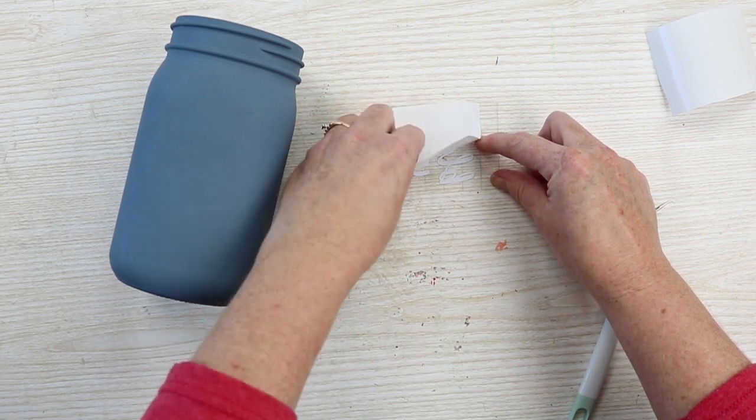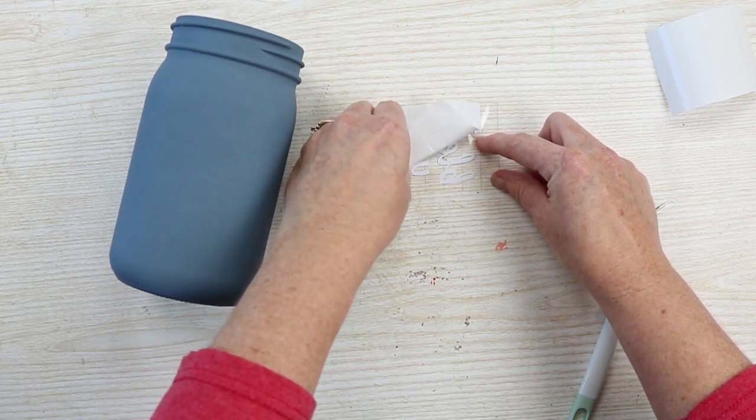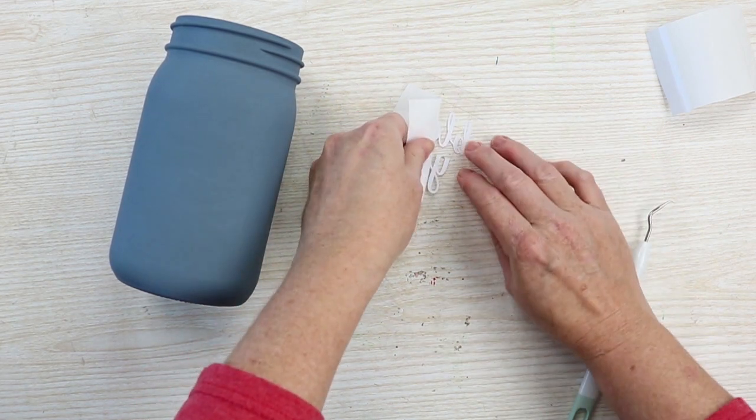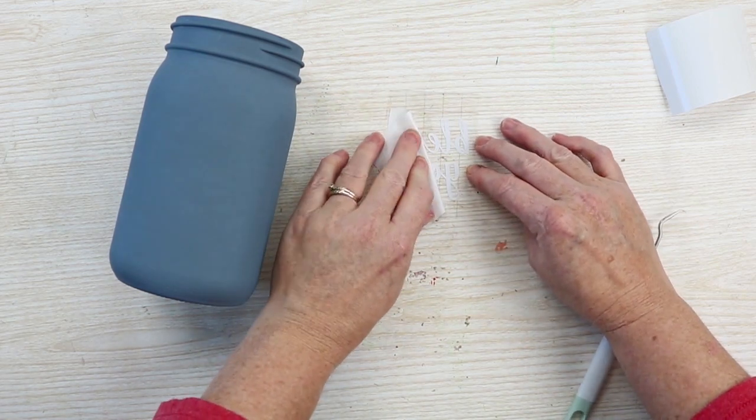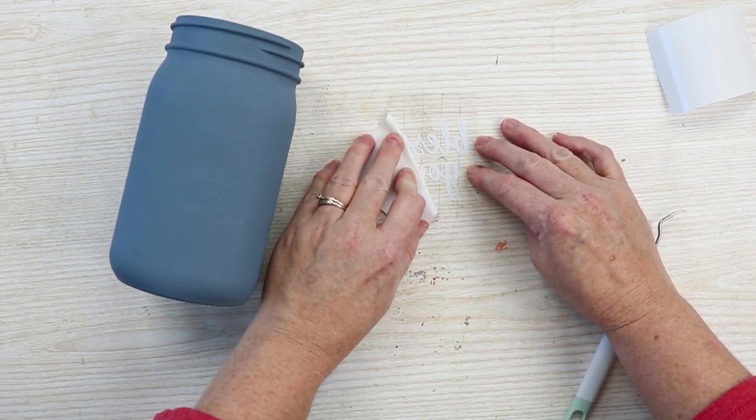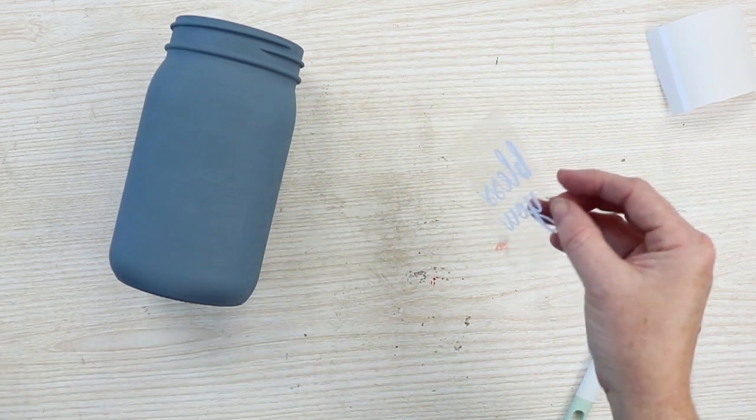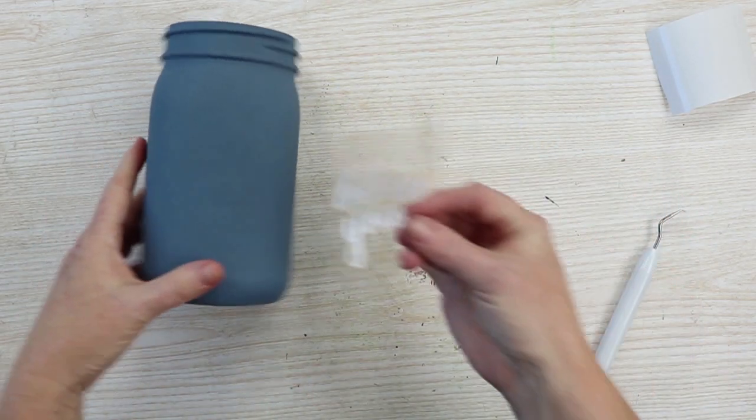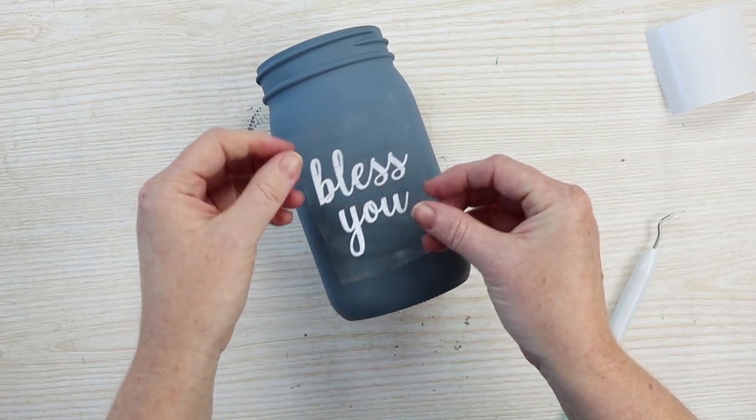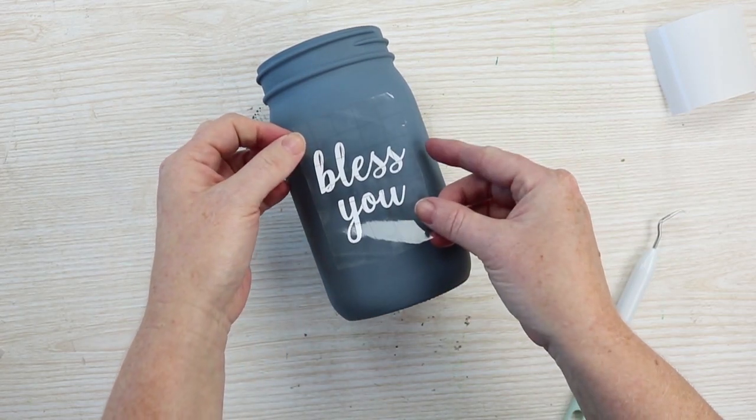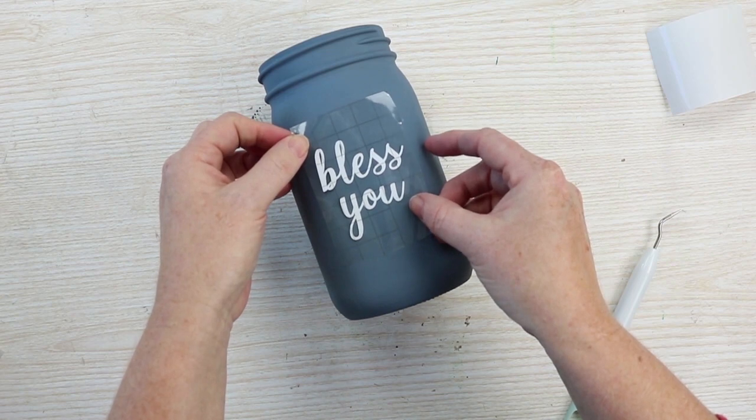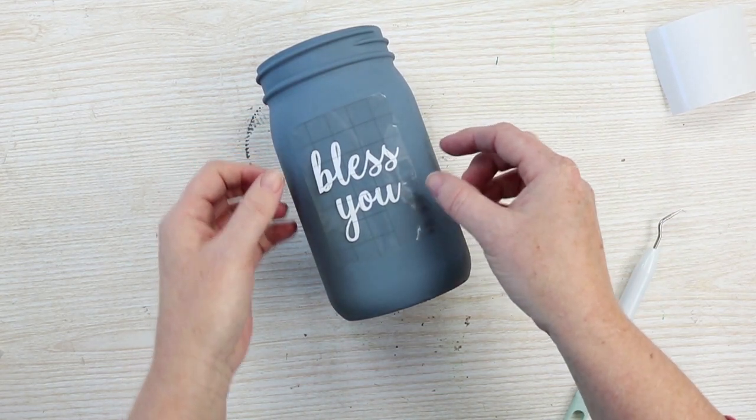Once you have the backing paper completely removed, you can put your words on the front of your mason jar. Because this mason jar has smooth sides, you can pick whatever side you would like. Just be sure to center it up and get the location you want before actually applying the vinyl to the front, then press it down well and remove the transfer tape.